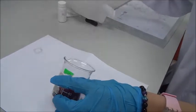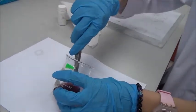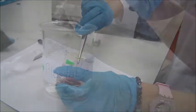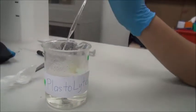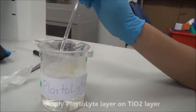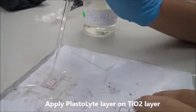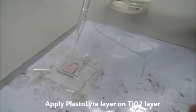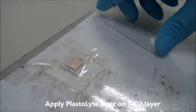For the electrolyte, we are using the plastolite we prepared before. Apply a bit on it. We're using the same method to slide evenly over the sample.